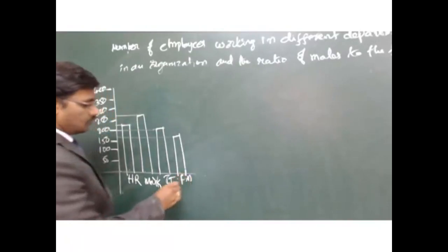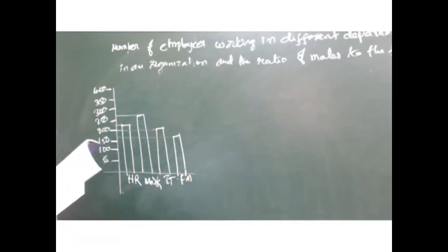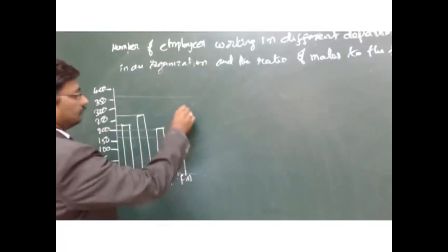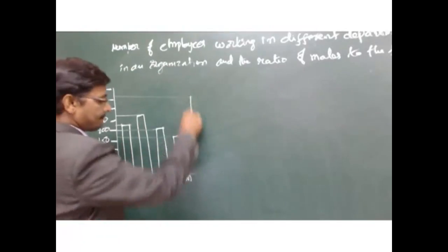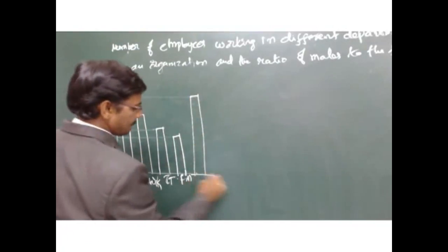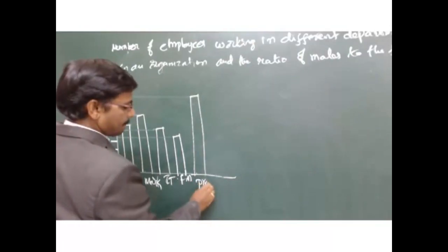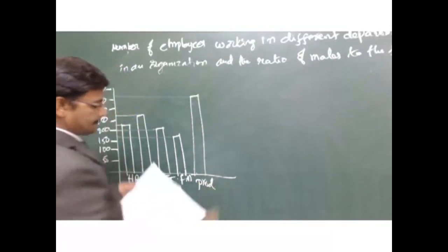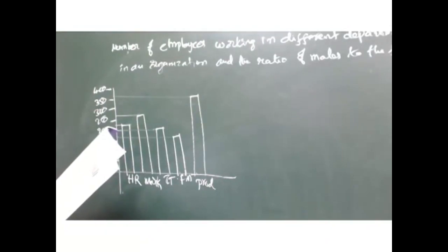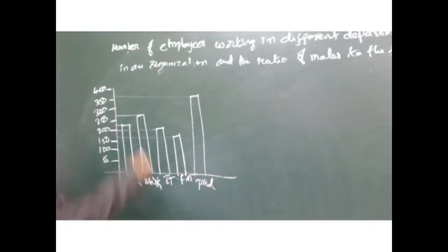Finance department has 175 members in the row. Next, the production department has 375 members in the row. Next, the merchant department has 350 members in the row.